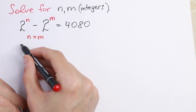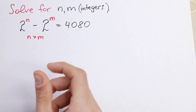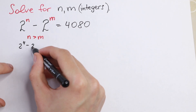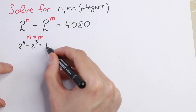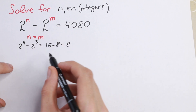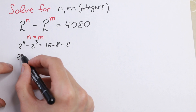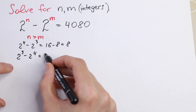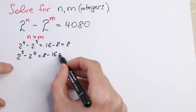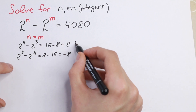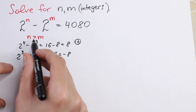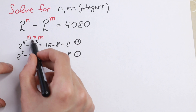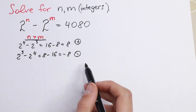For example, if we have 2 to the power 4 minus 2 to the power 3, we get 16 minus 8, which equals 8. The other way, 2 cubed minus 2 to the 4th, gives 8 minus 16, which is minus 8. So when the result is positive, n is greater than m.